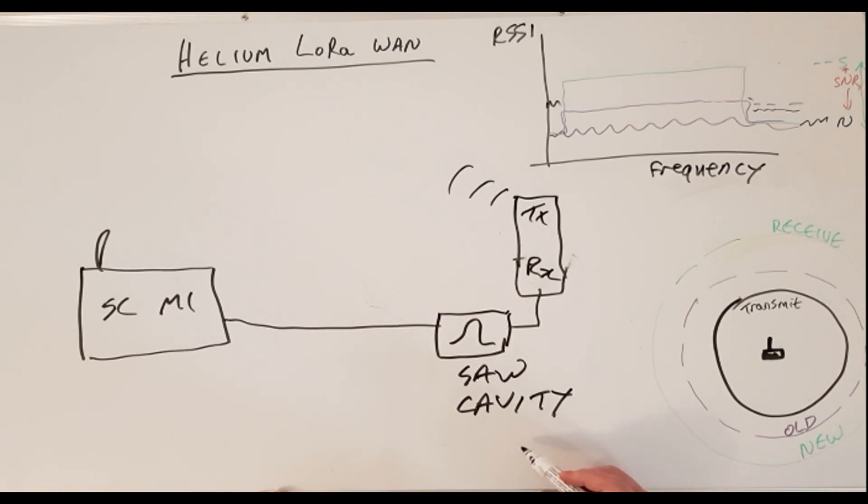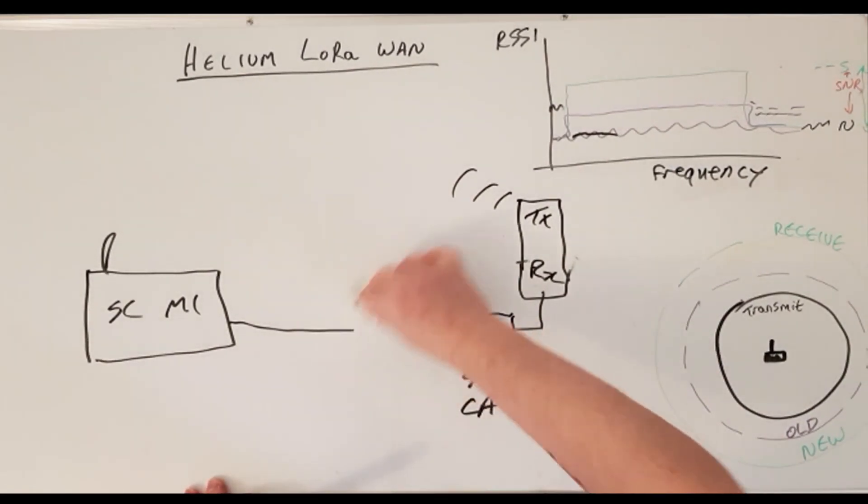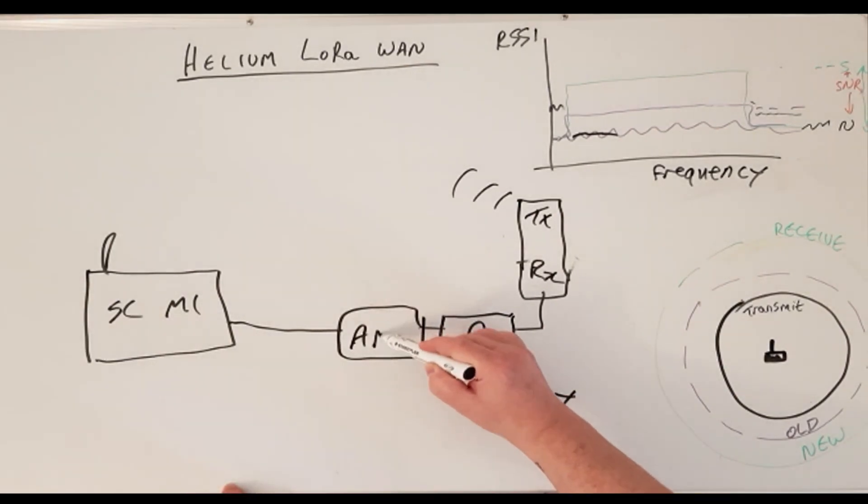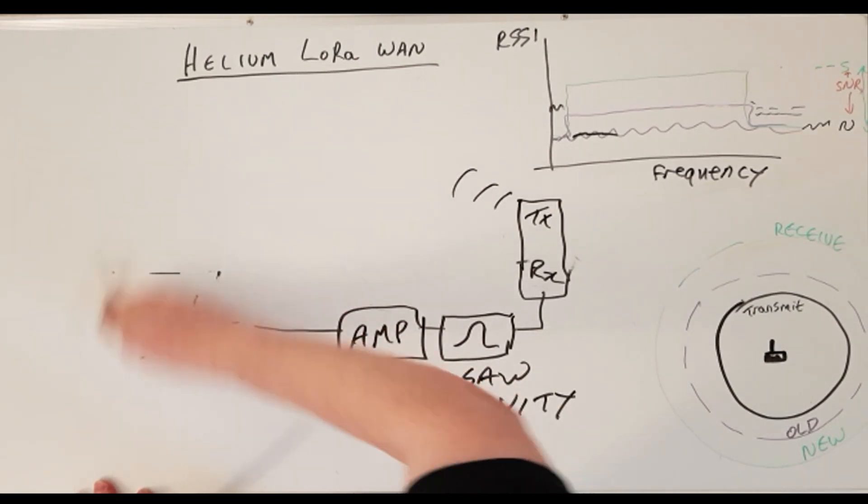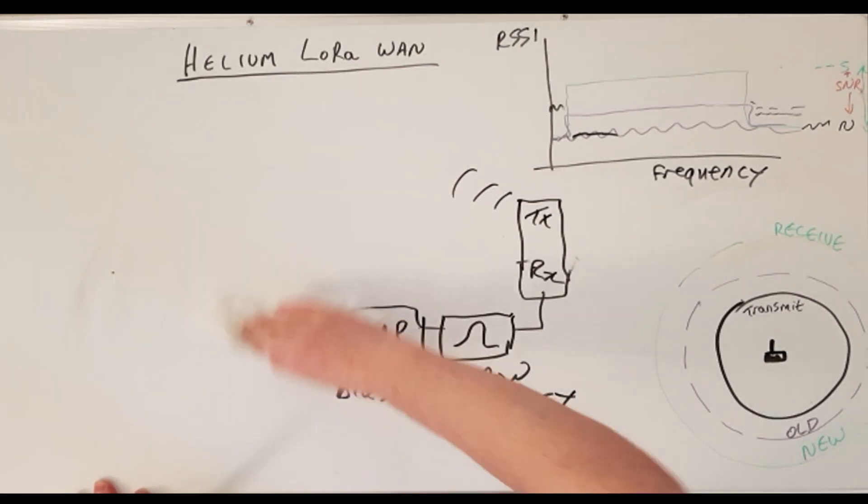Then we'd add in our amplifier. You'd also need the bias T as well. Bias T is simply providing a 12 volt DC supply to our amplifier along the same cable as your RF. And then the next stage, it's not particularly well shown here, but you'd move your miner to there.